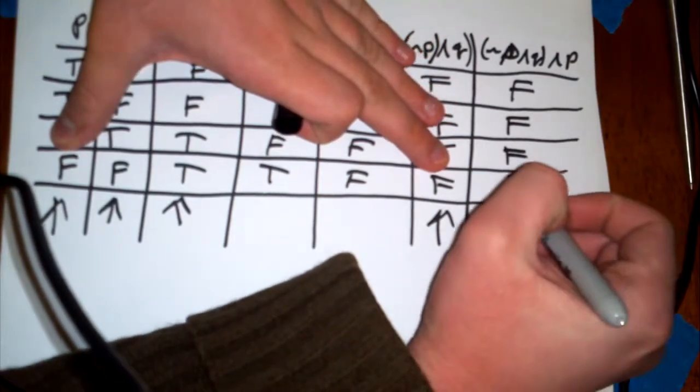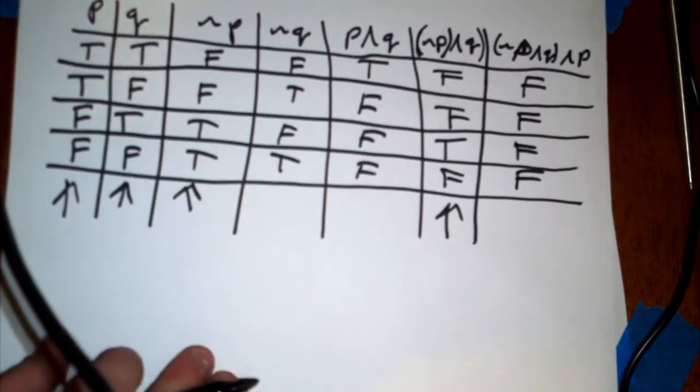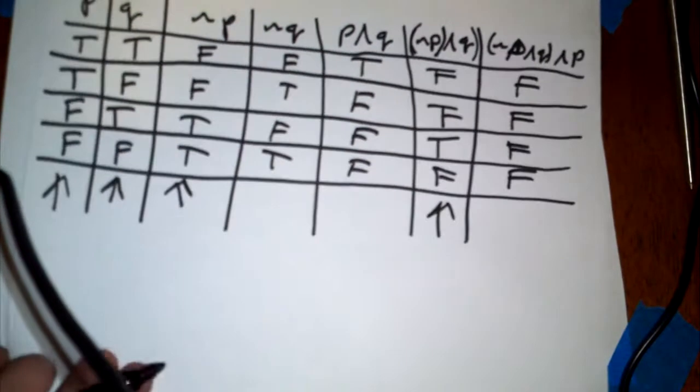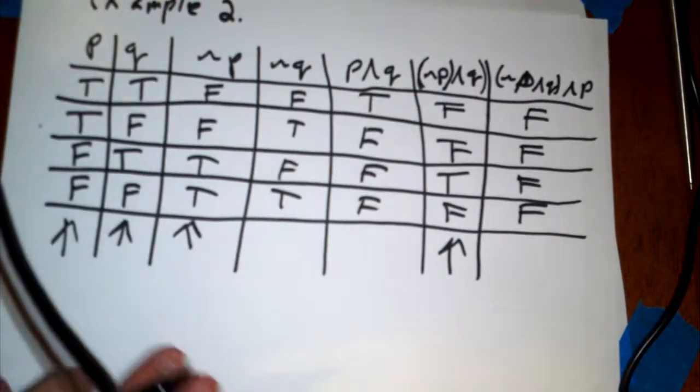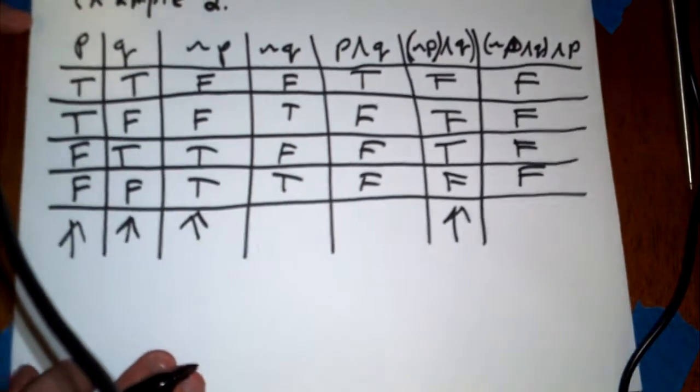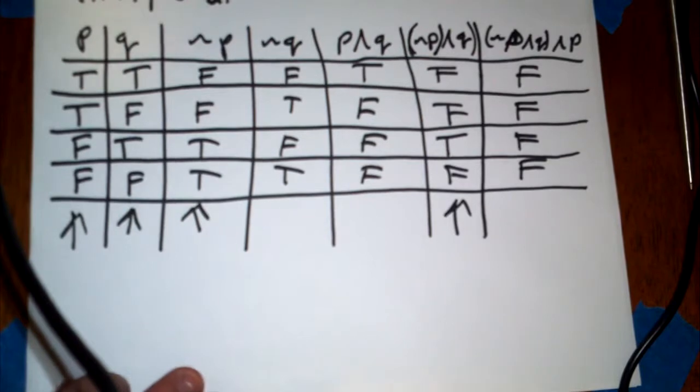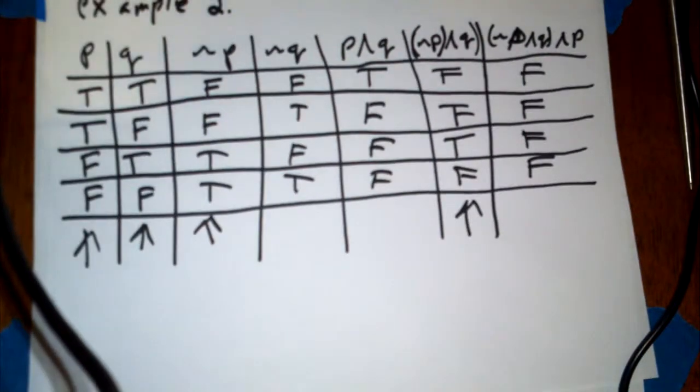So that's a basic look of compounded answers, I guess you can call it, for different types of truth tables. And in the next one, in the next video that I'm going to do, I'm going to try and explain statements that need certain premises in order to have a complete truth table. So, join me on the next one.